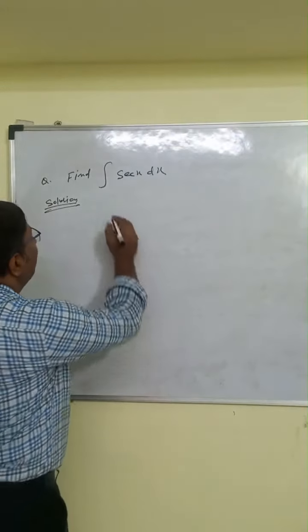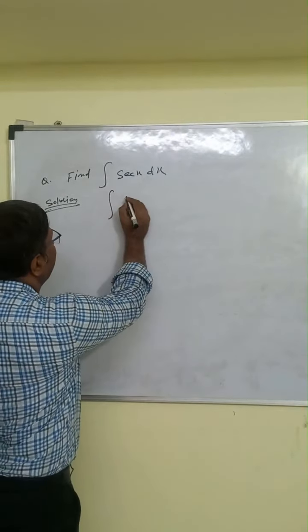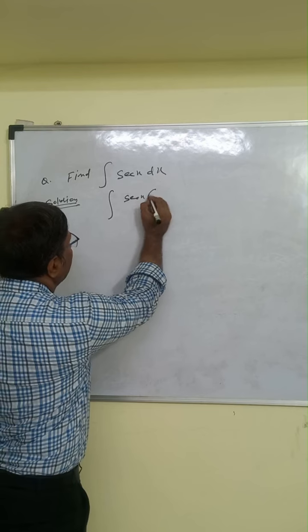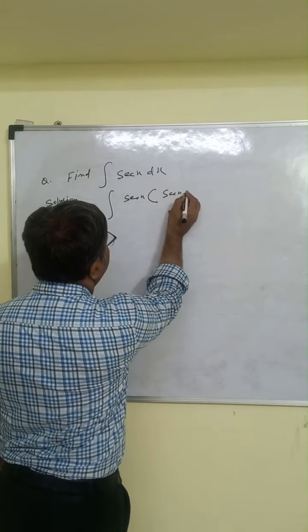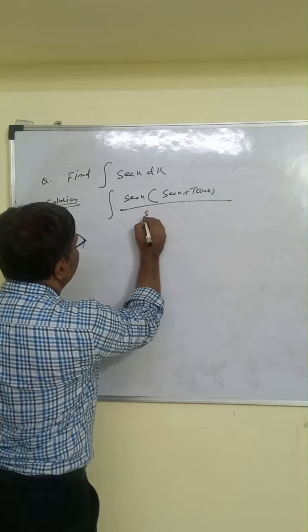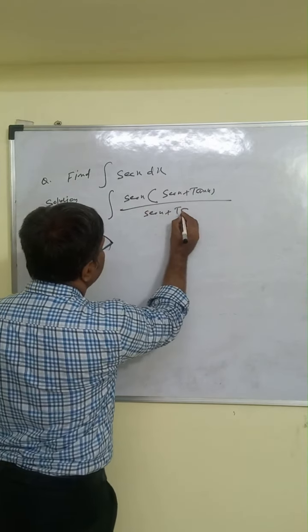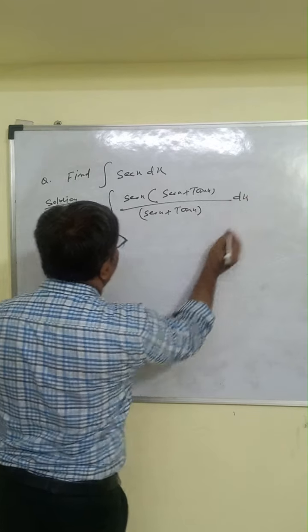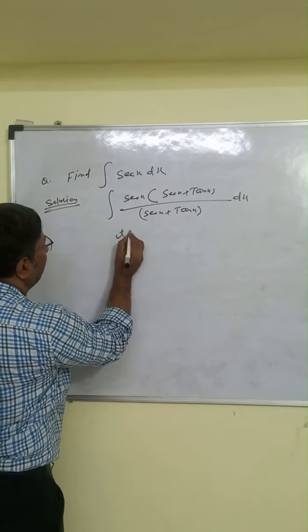We are solving this question. For this question, integration of sec x, just multiply sec x plus tan x in numerator and denominator. So here sec x plus tan x dx. And with substitution, just put t equal to sec x plus tan x.